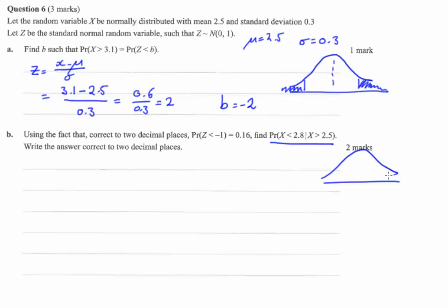They've said that the probability that z is less than 1, so that might be about there. They're saying that area there is 0.16.